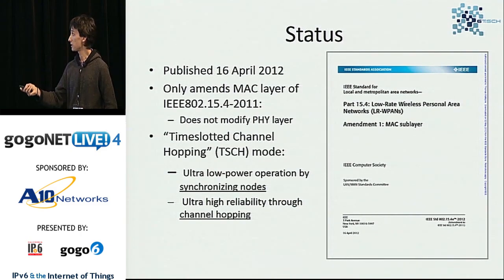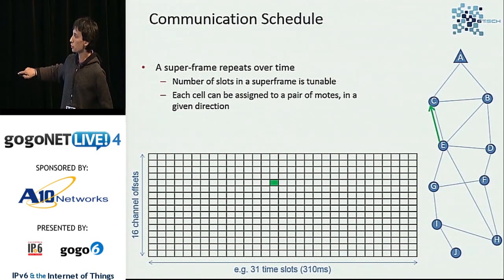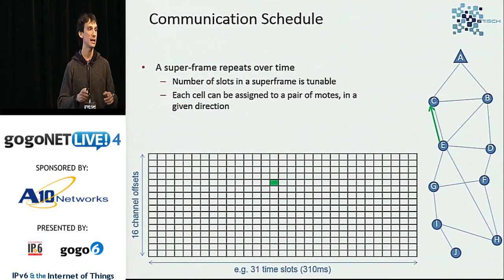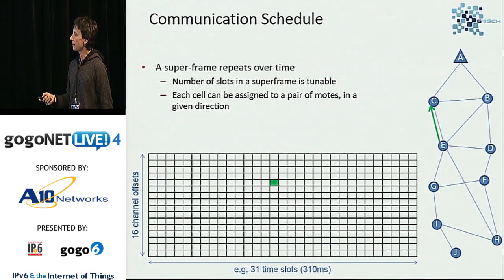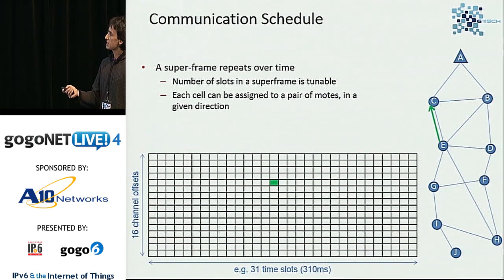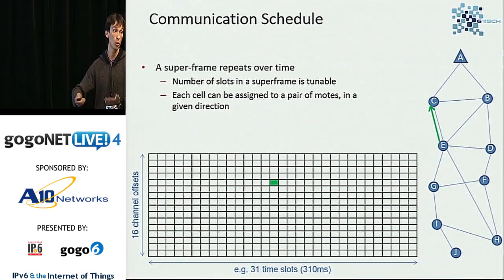15.4E also uses channel hopping. The MAC layer is structured in a superframe, which is split into time slots. Combined with 16 available channels, this builds a kind of mesh grid. A node can be configured to transmit in one of these cells — for example, if node E has to transmit to node C, it will do so at a particular time slot and channel offset. This structure repeats over time. A node follows this schedule, and if it has more cells scheduled, it will have more links or more packets.